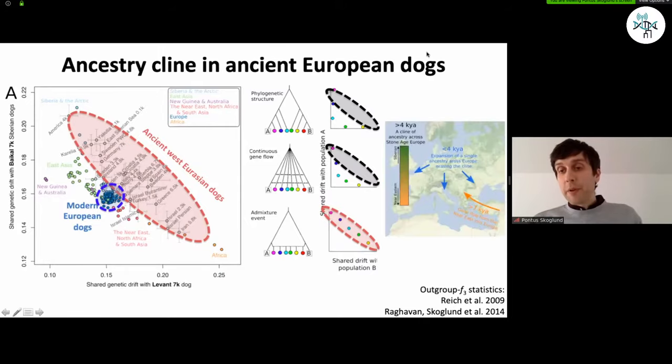So what we think happened was that maybe 10,000 or 7,000 years ago, there was this agricultural expansion into Europe. But after 4,000 years ago, at some point, we don't know exactly what happened. Future ancient DNA studies have to find out. There was an expansion of some type of ancestry across Europe that really homogenized the dog ancestry there, and formed the diversity of most present-day modern European breeds.